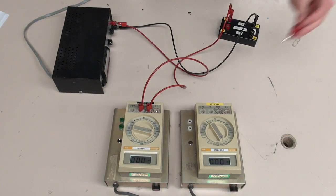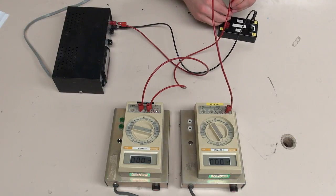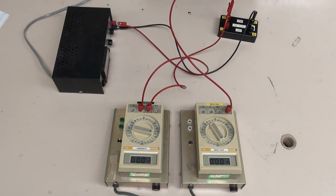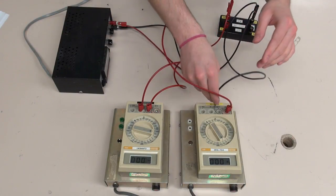Voltmeters are connected in parallel with the components whose voltage is to be measured because we want to measure the change in voltage across that component, or the difference in voltage of one side of the component when compared to the other side.